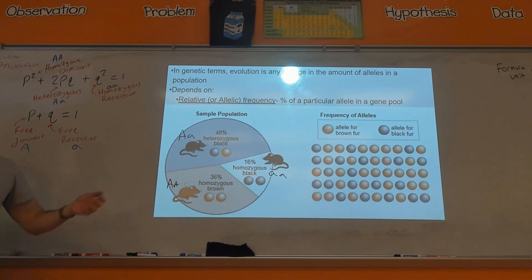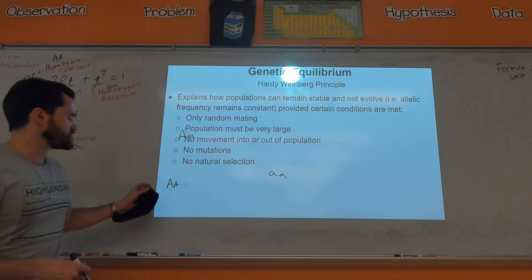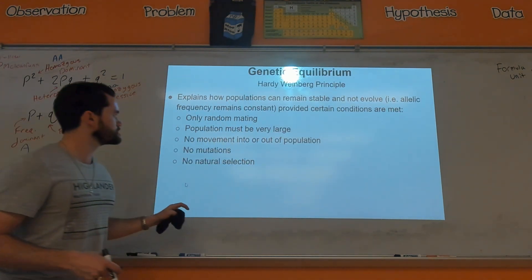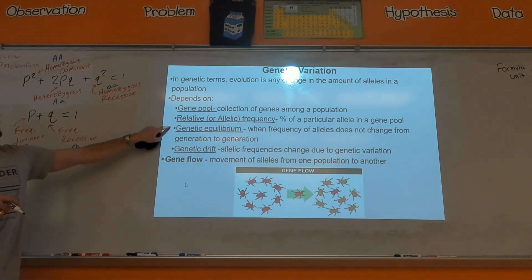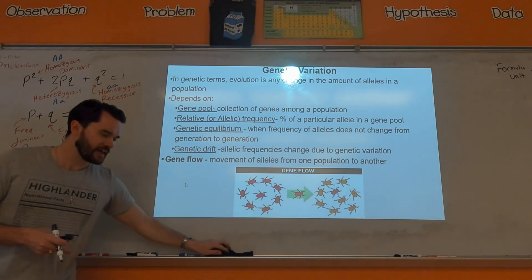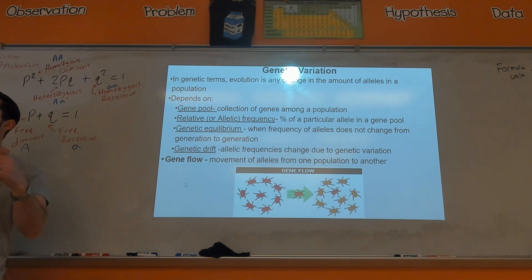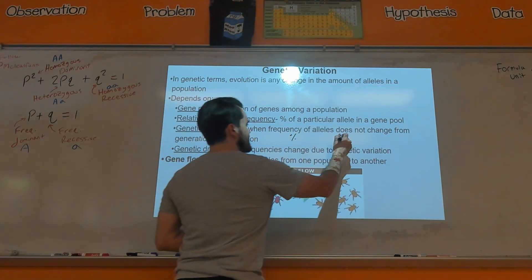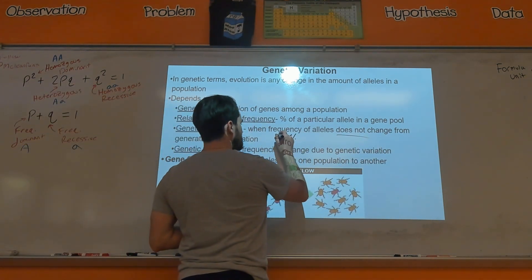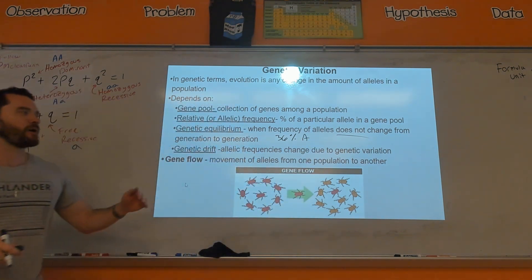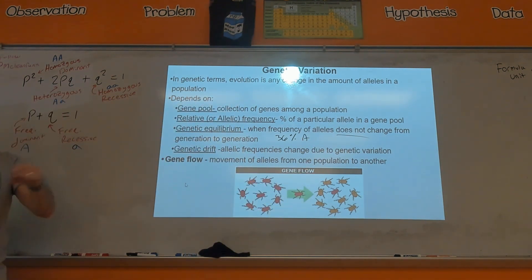Evolution would be the change in the percentage of homozygous brown or homozygous black over time. Now let me cover genetic equilibrium and genetic drift. Genetic equilibrium — similar to chemical equilibrium — means the frequency or percentage of alleles is not changing. If 36% of the alleles are dominant and the population is at genetic equilibrium, each new generation you would stay at 36%. If you go up or down from 36%, we say that population has evolved.